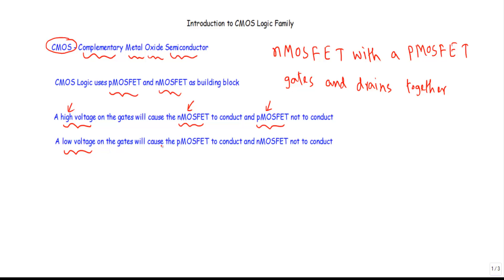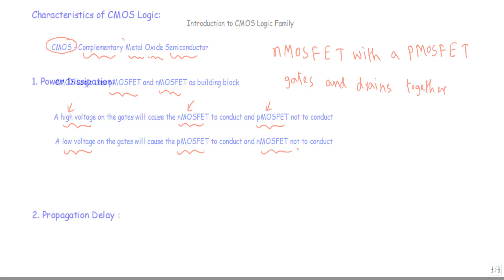If we apply a low voltage at the gate terminal, our p-MOSFET will conduct and n-MOSFET will not conduct. Now I will talk about the characteristics of CMOS logic.